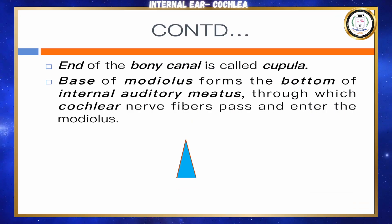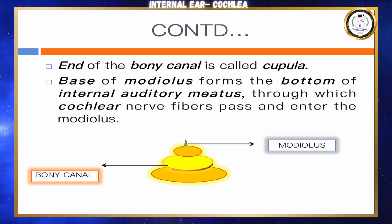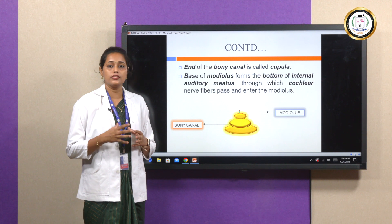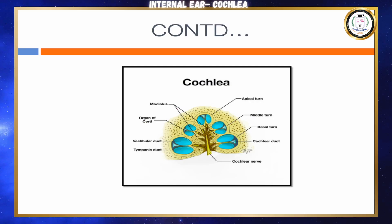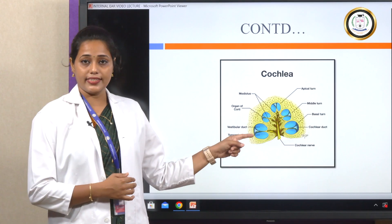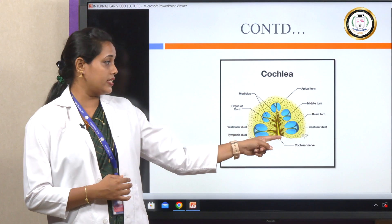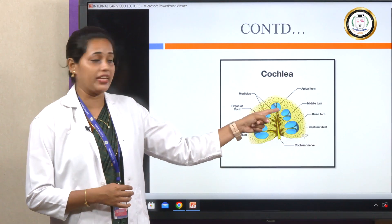The central conical axis is called the modiolus. The bony canal winds around it for two and a half turns. In the cross-section of the cochlea, the modiolus is surrounded by the bony canal. The turn at the base is called the basal turn, the turn at the middle level is the middle turn, and the turn at the top is the apical turn.